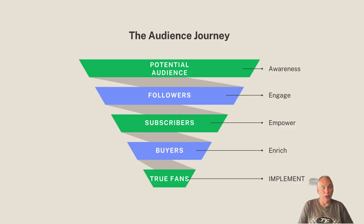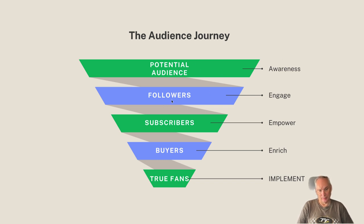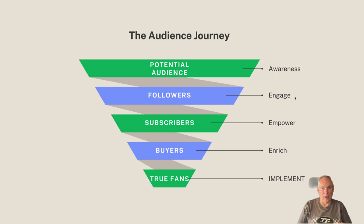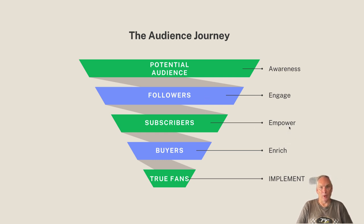Here is your typical audience journey — this is what you should aim for. You have your potential audience and we need to make them aware of you. Then some of that potential audience will turn into followers. With followers, you want to engage with them and make sure they're understanding what you're teaching and they want to know more. Then we move on to subscribers — our job is to empower them. We want them to start making money and building an income from what we're teaching them.